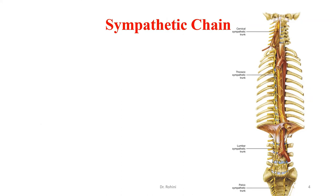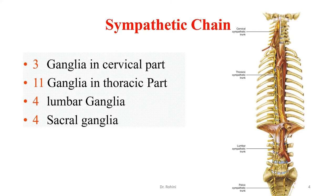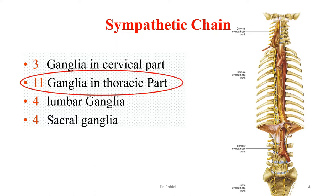The sympathetic chain has a number of thickenings called ganglia. There are three ganglia in the cervical part. In the thoracic region there are originally 12, but the first thoracic ganglion usually fuses with the inferior cervical ganglion to form the stellate ganglion, leaving 11 thoracic ganglia. There are four in the lumbar part and four in the sacral region.